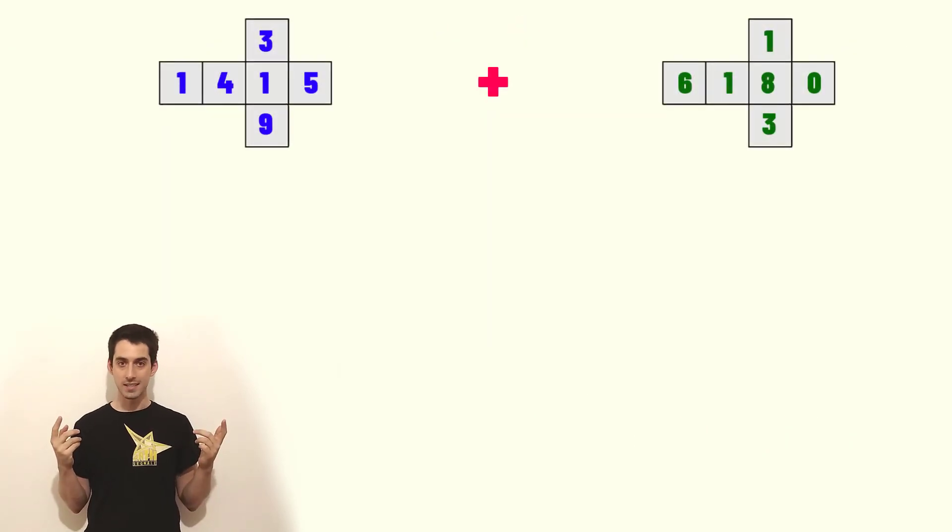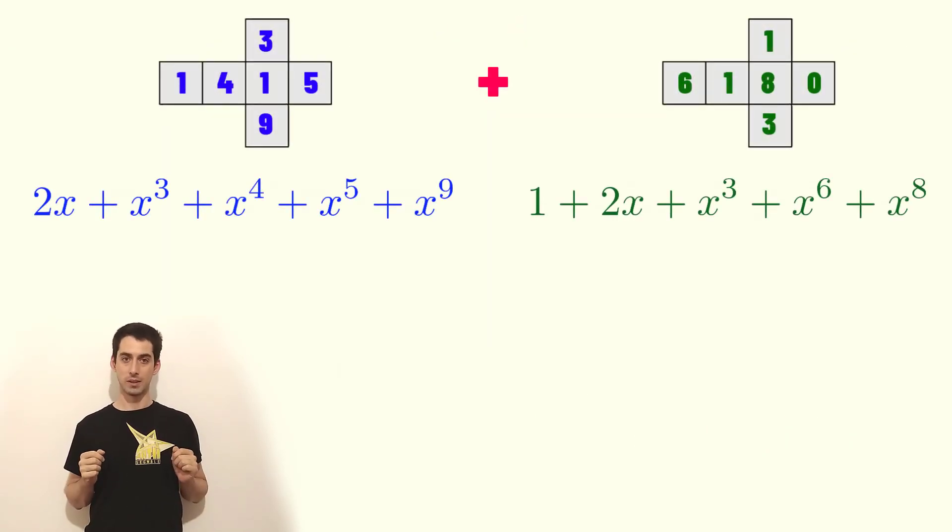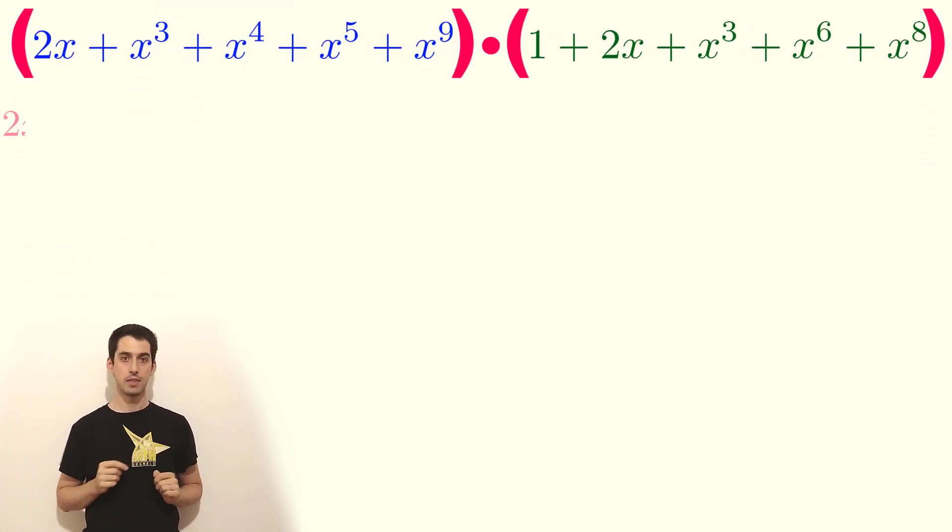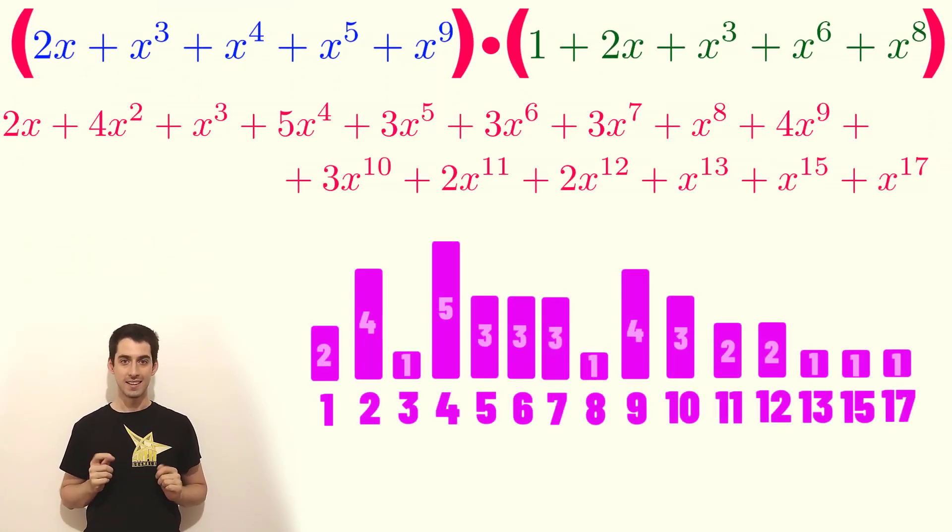So these are the two dice. These are the corresponding polynomials. Let's multiply them together. We get this and yes, they are the same.